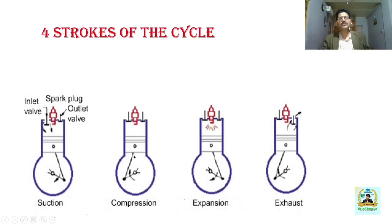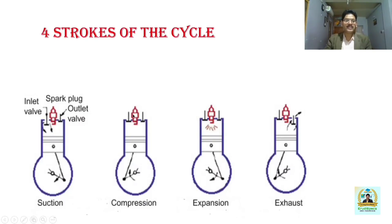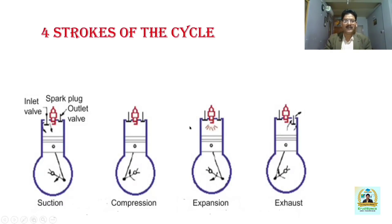During the compression stroke, both the inlet and exhaust valves are in the closed position. The piston moves from BDC to TDC, thereby compressing the air-fuel mixture drawn into the cylinder during the previous stroke down to the clearance volume. Due to this, there is a significant increase in pressure and temperature. Just before the compression process is over, the spark plug gives an electric spark. Due to compression, the pressure and temperature are already raised, and when the mixture comes in contact with the spark, combustion of the air-fuel mixture takes place, developing a huge amount of thermal and pressure energy.